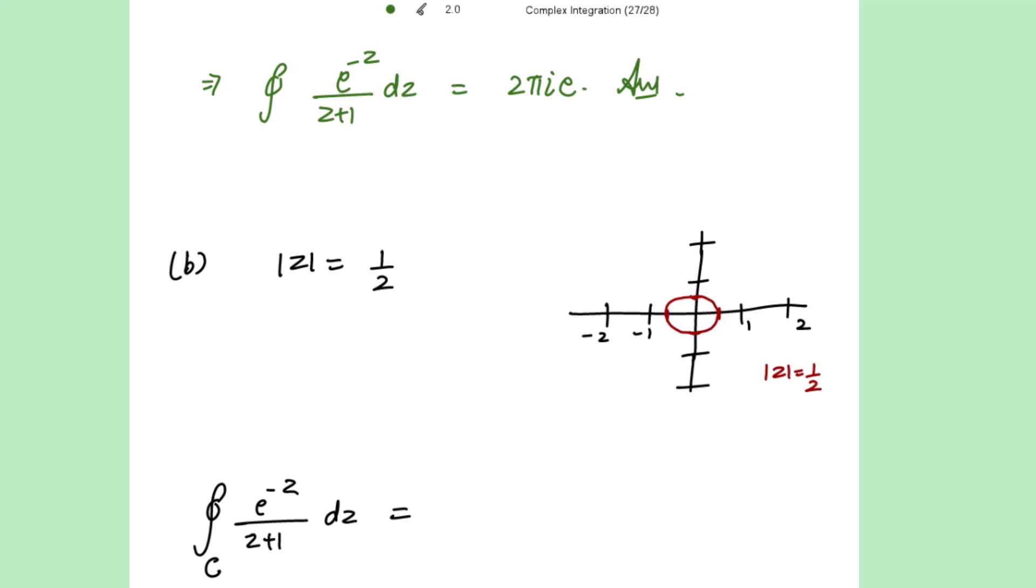Second part is mod z equal to 1 by 2. Now here radius is 1 by 2 given to us. So you notice over here, this is the region drawn as mod z equal to 1 by 2, the circle with center 0 and radius 1 by 2. And now let's find out the singular points.